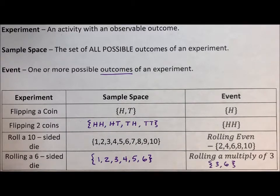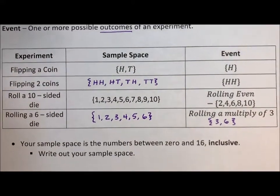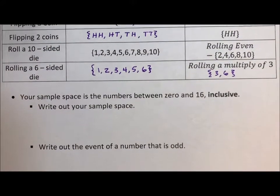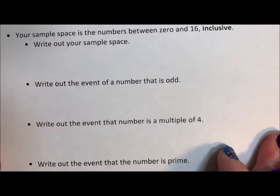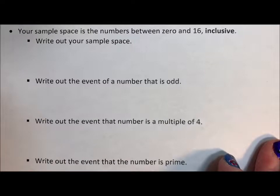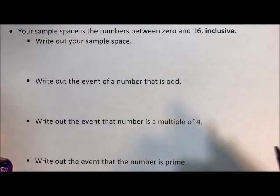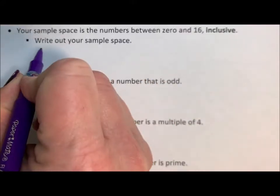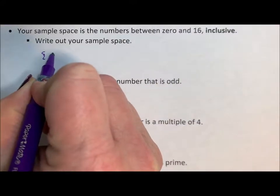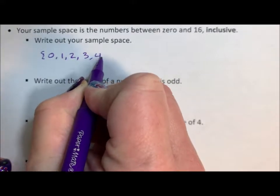So that is how we're defining experiment, sample space, and event. Let's look at an example. Your sample space is the numbers between zero and 16 inclusive — that means we're including zero and 16. So if we write out our sample space, we have {0, 1, 2, 3, 4, 5, ...} all the way through.